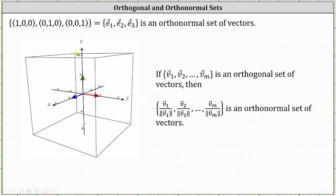On the left, we have the graph of the standard basis vectors in R³, and we can see all the vectors are unit vectors and they are also perpendicular or orthogonal to each other. If a set of vectors v₁ through vₘ is an orthogonal set, then if we take each of the vectors and divide by their magnitudes forming unit vectors, the new set is an orthonormal set of vectors.